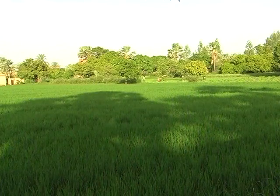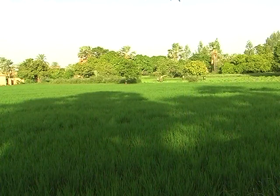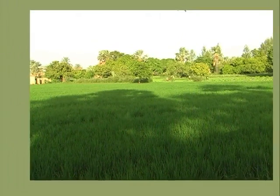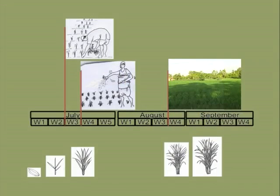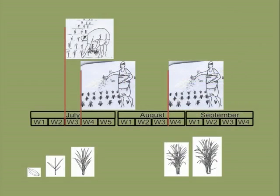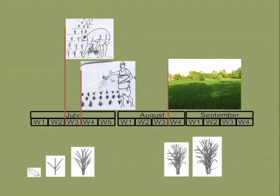Apply urea a second time when the rice plant starts to produce panicles. This moment depends on the variety and the planting date. Good timing requires some experience. If the stems are bulging and pregnant with panicles, the application should have been done two weeks earlier.